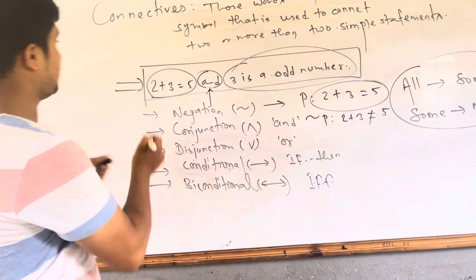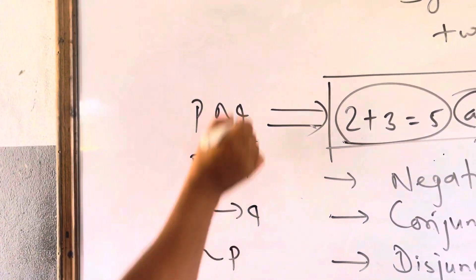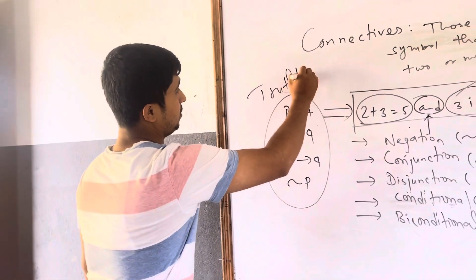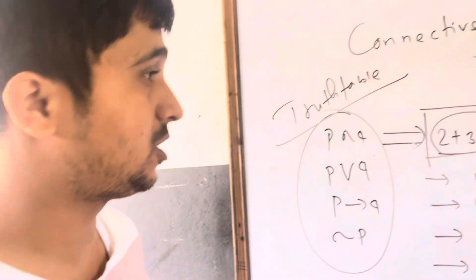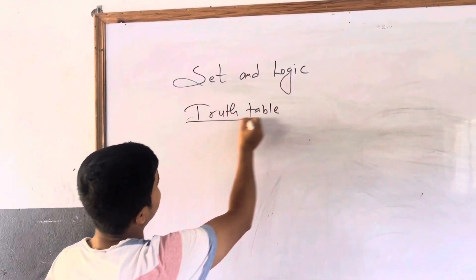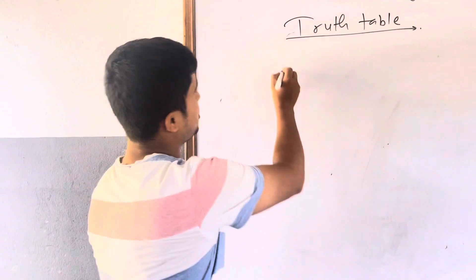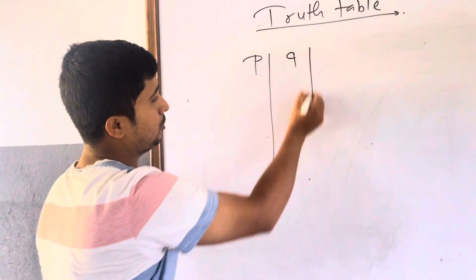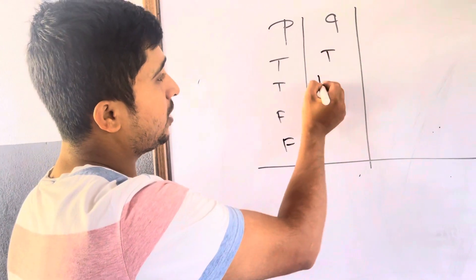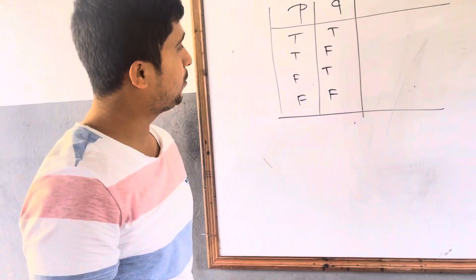For example, we want to make the truth table of P∧Q, P∨Q, P→Q, and ¬P. Now I am going to teach how to make truth tables of combined statements. Let's start with conjunction. Suppose there are two statements P and Q. The possibilities for P and Q are: true, true, false, false — and — true, false, true, false. This is like 0011 in computer science.